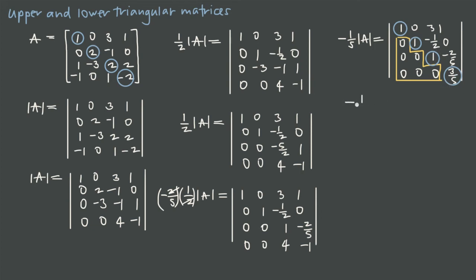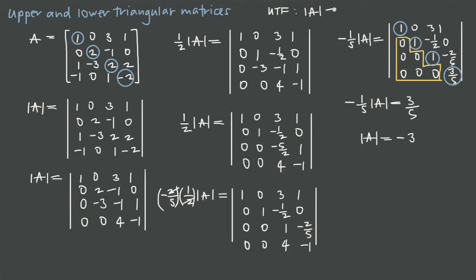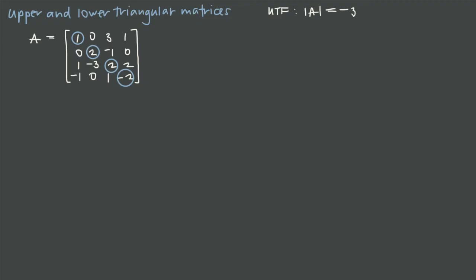The determinant of an upper triangular matrix is the product of its main diagonal entries: 1 × 1 × 1 × (3/5) = 3/5. So our equation is: −(1/5) × det(A) = 3/5. Multiplying both sides by −5 gives det(A) = −3. In upper triangular form, we found that the determinant of A equals −3.